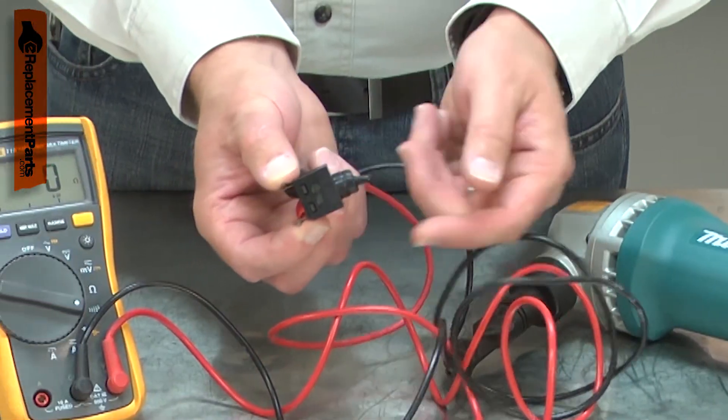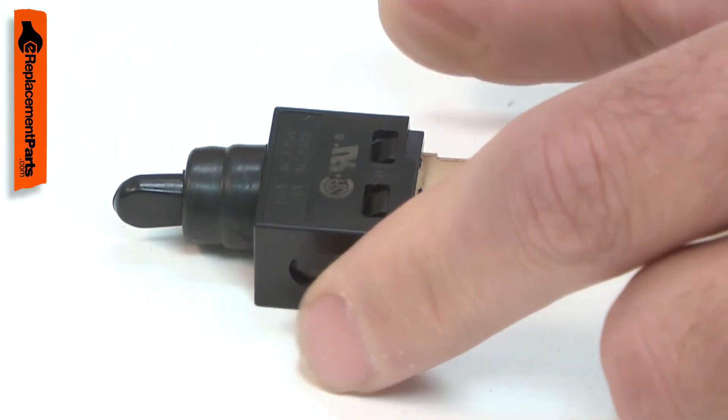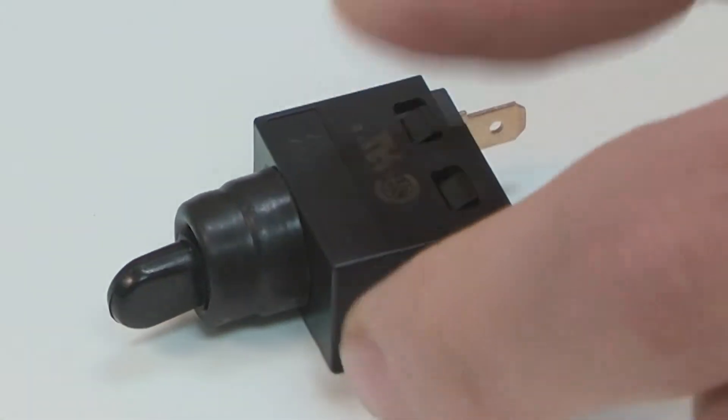Testing for a bad switch can be easily done using a multimeter. Replacing the switch is a repair that you can do yourself, and I'm going to show you how.